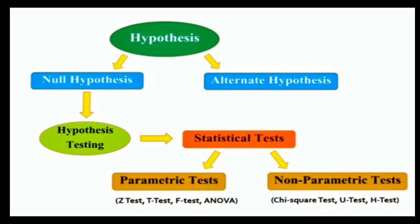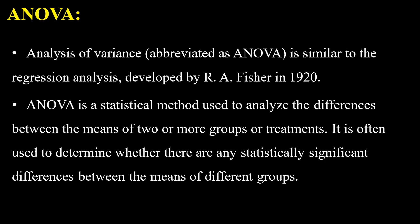Now see the definition. ANOVA is Analysis of Variance; in short, we have abbreviated it as ANOVA. It is similar to regression analysis, which was developed by R.A. Fisher. ANOVA is a statistical method used to analyze the differences between the means of two or more groups, treatments, or samples. It is often used to determine whether there are any statistically significant differences between the means of different groups.